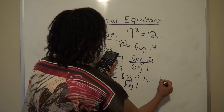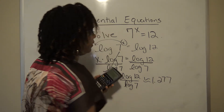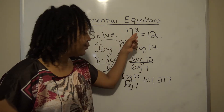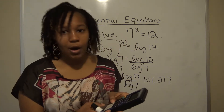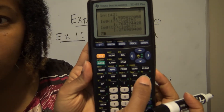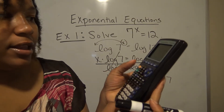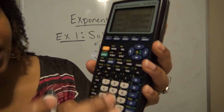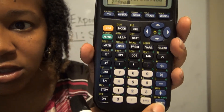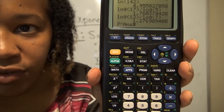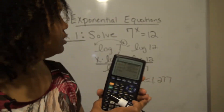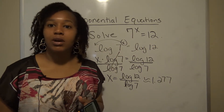So x is approximately 1.277, meaning 7 raised to the 1.277 power should equal 12. We can verify this on the calculator: using the caret key to raise 7 to that power using the previous answer, and we get 12. That confirms our answer is correct.